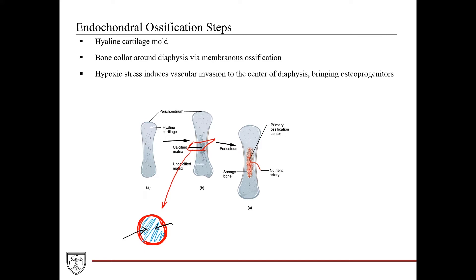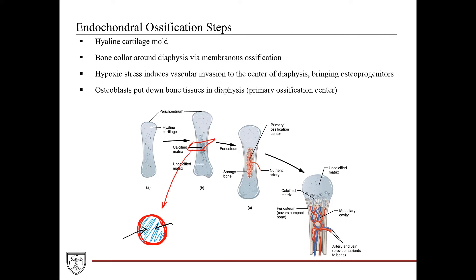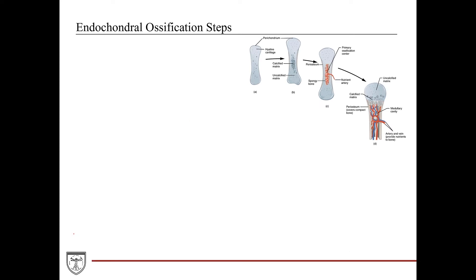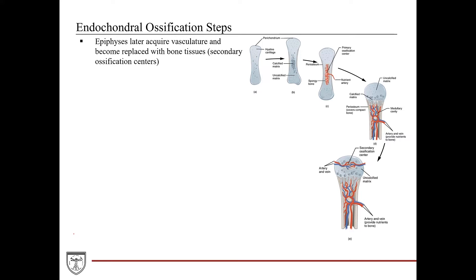This hypoxic stress actually attracts a vascular invasion into the center of the diaphysis. With the blood vessel comes the osteoprogenitor cells, which then give rise to osteoblasts, which then start to lay down the bony matrix within the center of the diaphysis. For this reason, the diaphysis of the long bone is also known as the primary ossification center. Some time later, a similar process will occur in the epiphysis with vascular invasion bringing in osteoprogenitor cells, which then start to establish ossification centers. So the epiphyses are called the secondary ossification centers.